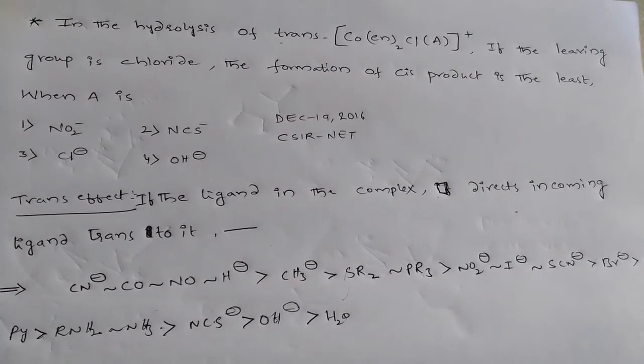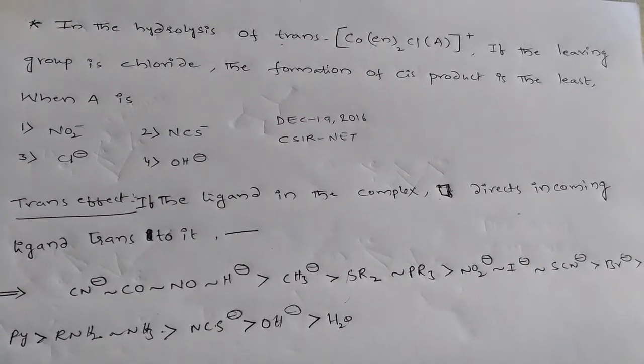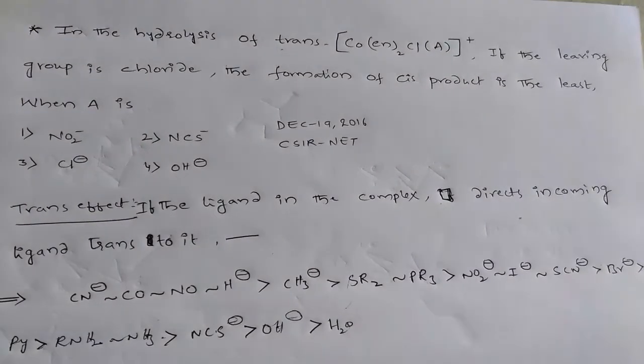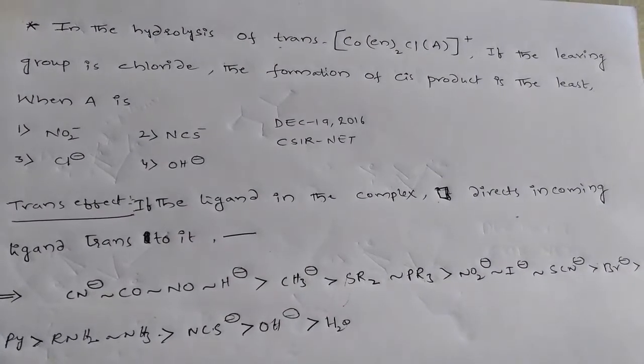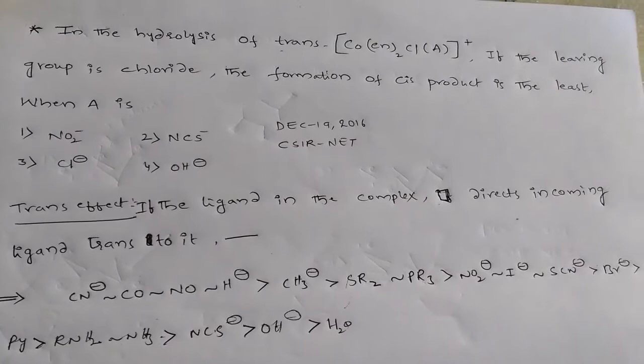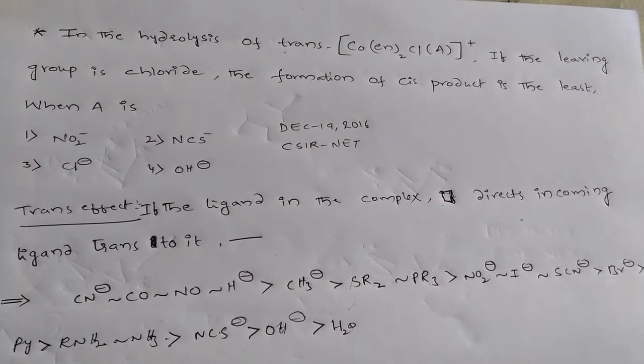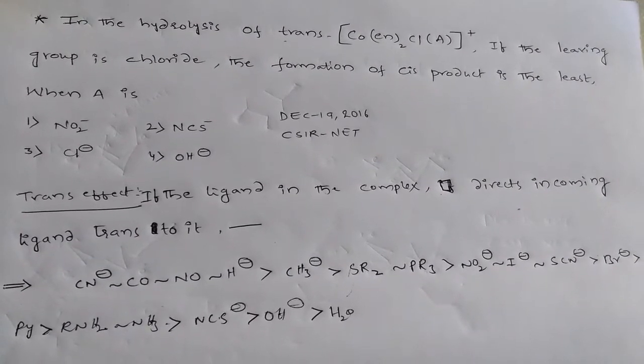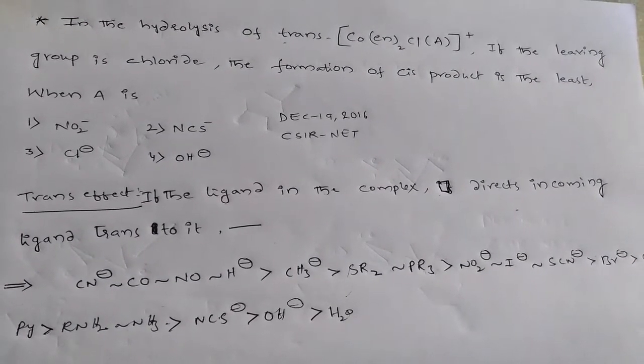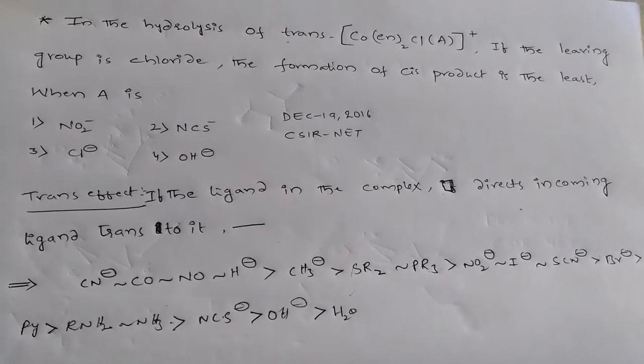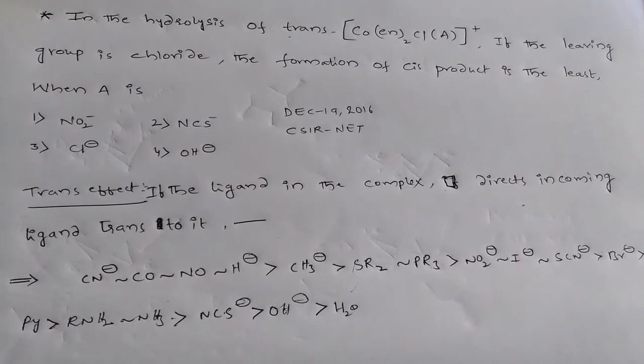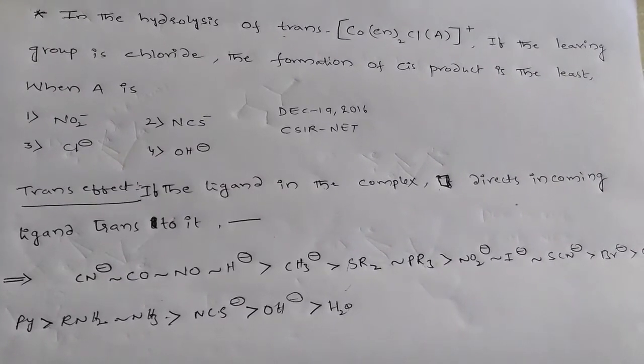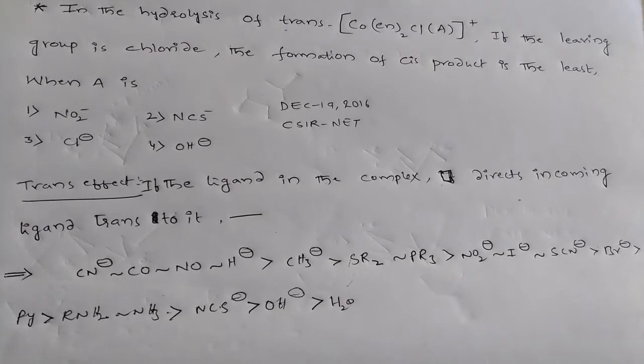The question is, in the hydrolysis of trans-cobalt complex, it has diethylamine, chlorine, and A. So A should be the options. If the leaving group is chloride, the formation of cis-product is the least when A is: first option NO2-, second option NCS-, third option Cl-, and fourth option is OH-.